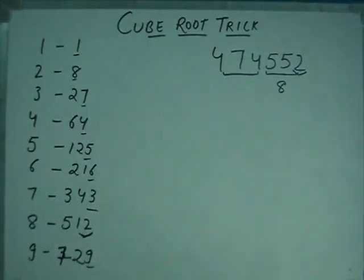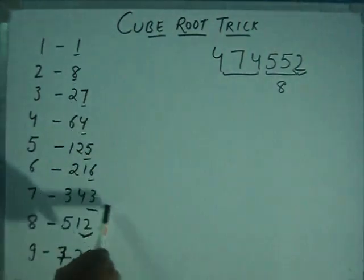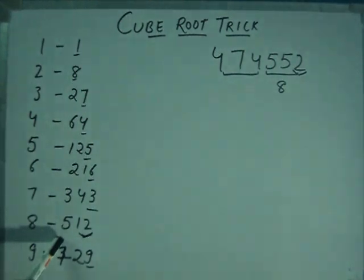And for this part, you have to do that. The number should be lesser than 474 and nearest to it. Like if we check the series, we get 343 and 512. 512 is greater than 474.